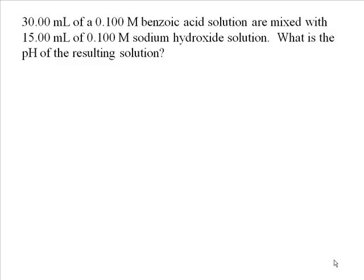For our demonstration, we're going to take 30 milliliters of a 0.1 molar benzoic acid solution and mix it with 15 milliliters of a 0.1 molar sodium hydroxide solution. In essence, this is a partial titration — we have not added enough sodium hydroxide to neutralize all of the benzoic acid. The Ka for benzoic acid, according to the Burge book, is 6.5 × 10⁻⁵, and the pKa is 4.19.